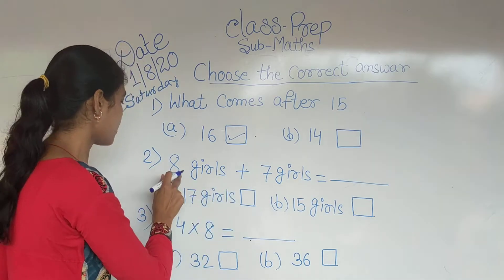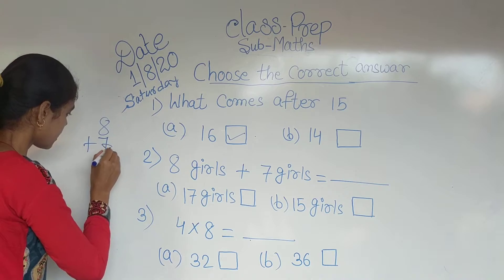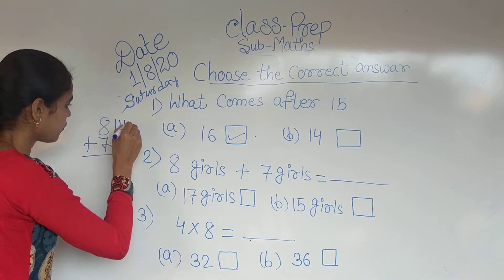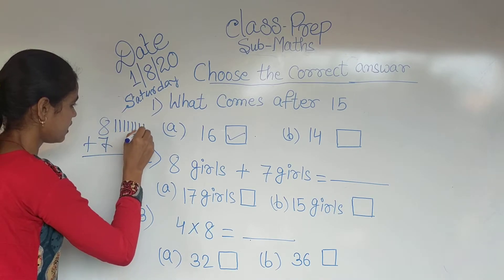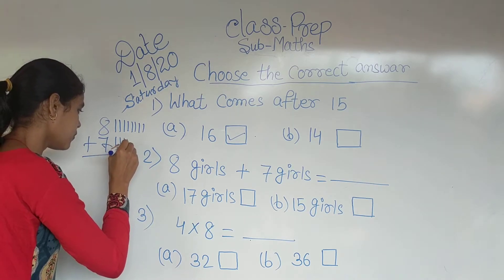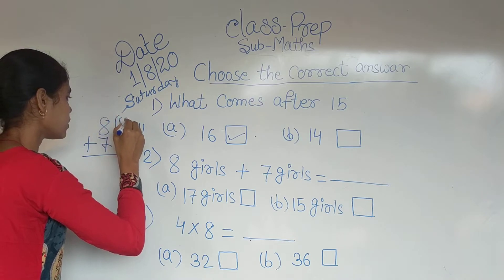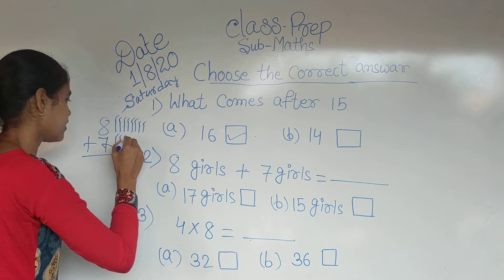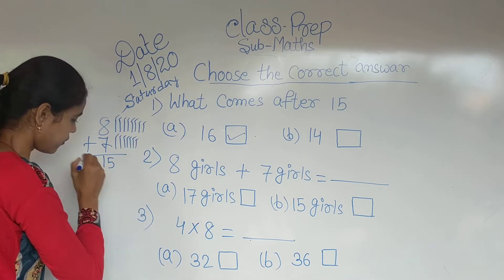To side mein hum log rough kar sakte hain. 8 plus 7, add karenge. 1, 2, 3, 4, 5, 6, 7, 8. Neeche 7: 1, 2, 3, 4, 5, 6, 7. Add: 1, 2, 3, 4, 5, 6, 7, 8, 9, 10, 11, 12, 13, 14, 15.